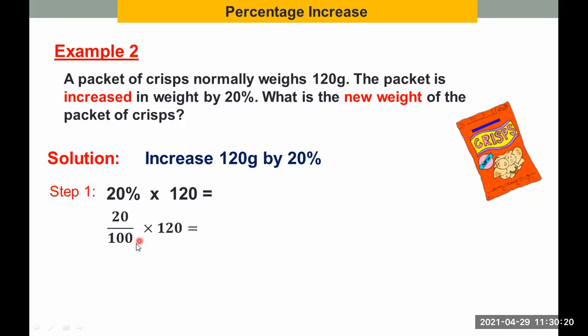So we write 20 over 100 times 120. And then we divide 120 by 100. It will give us 1.2. And finally, we multiply 1.2 by 20. So we have 24. Therefore, 20% of 120 is 24.